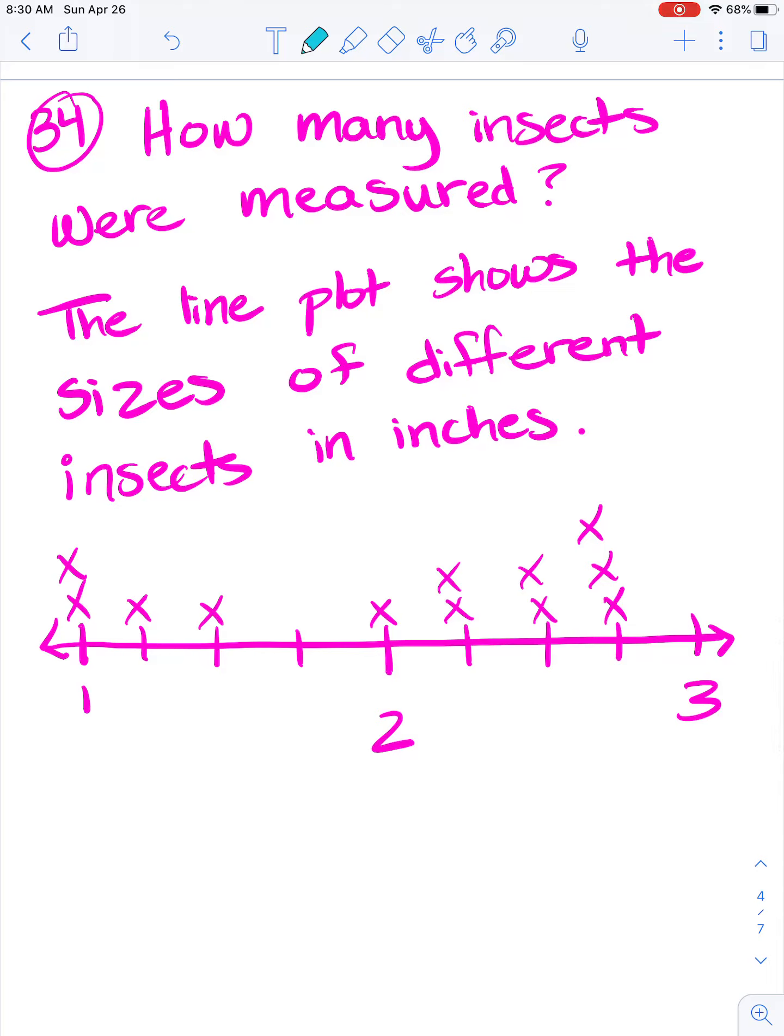It's asking how many insects were measured. The line plot shows the sizes of different insects in inches. So we've got one inch, two inch, three inches, one and a fourth inch, one and two fourths inch, one and three fourths inch. And two, two and a fourth, two and two fourths, two and three fourths. But it is not really asking about the sizes. It's not saying what the difference in the size is or anything like that. It's asking how many insects.